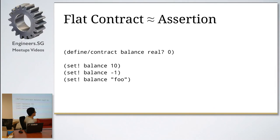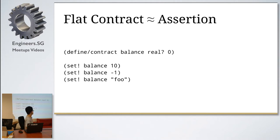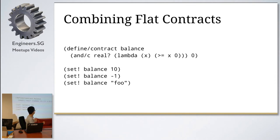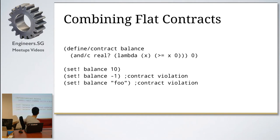In Racket, a flat contract is basically similar to an assertion. By 'flat' it means you can check whether something satisfies the contract immediately when the value is present. For example, we define a variable called balance and say it must contain a real number value. If we set balance to a string, we get a contract violation error. You can also combine multiple contracts for more expressiveness — for example, balance must be real and greater than or equal to zero for accounting purposes.